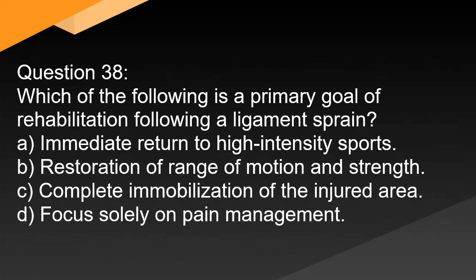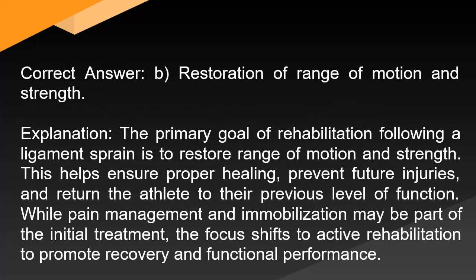Question 38: Which of the following is the primary goal of rehabilitation following a ligament sprain? A. Immediate return to high-intensity sports. B. Restoration of range of motion and strength. C. Complete immobilization of the injured area. D. Focus solely on pain management. Correct answer: B. Restoration of range of motion and strength. The primary goal of rehabilitation following a ligament sprain is to restore range of motion and strength. This ensures proper healing, prevents future injuries, and returns the athlete to their previous level of function. While pain management and immobilization may be part of initial treatment, the focus shifts to active rehabilitation to promote recovery and functional performance.